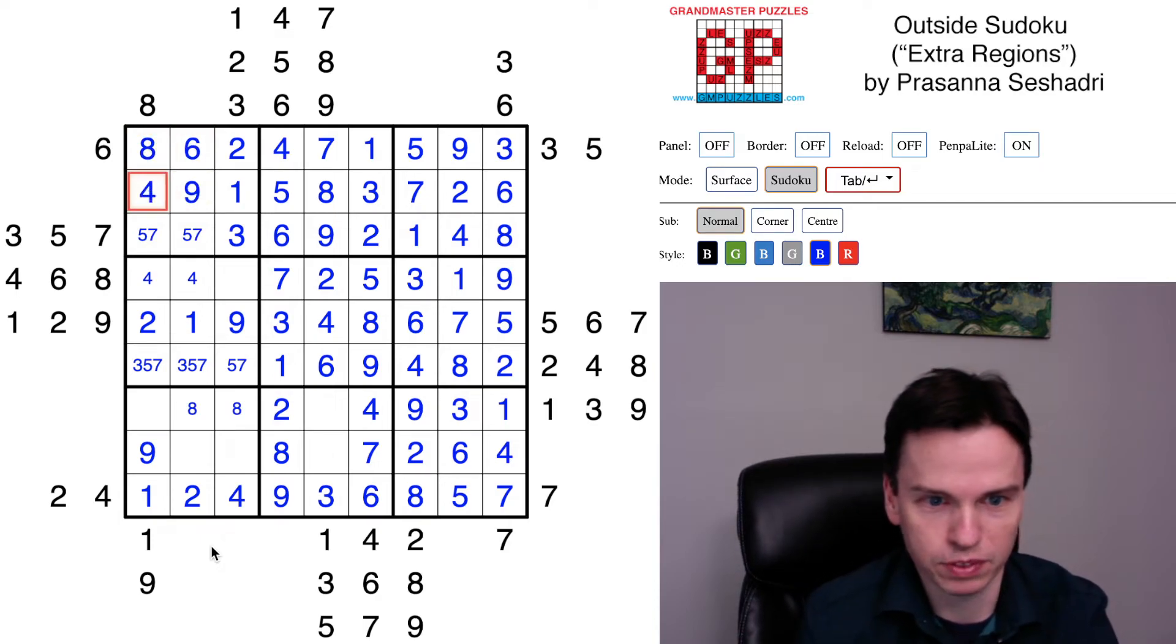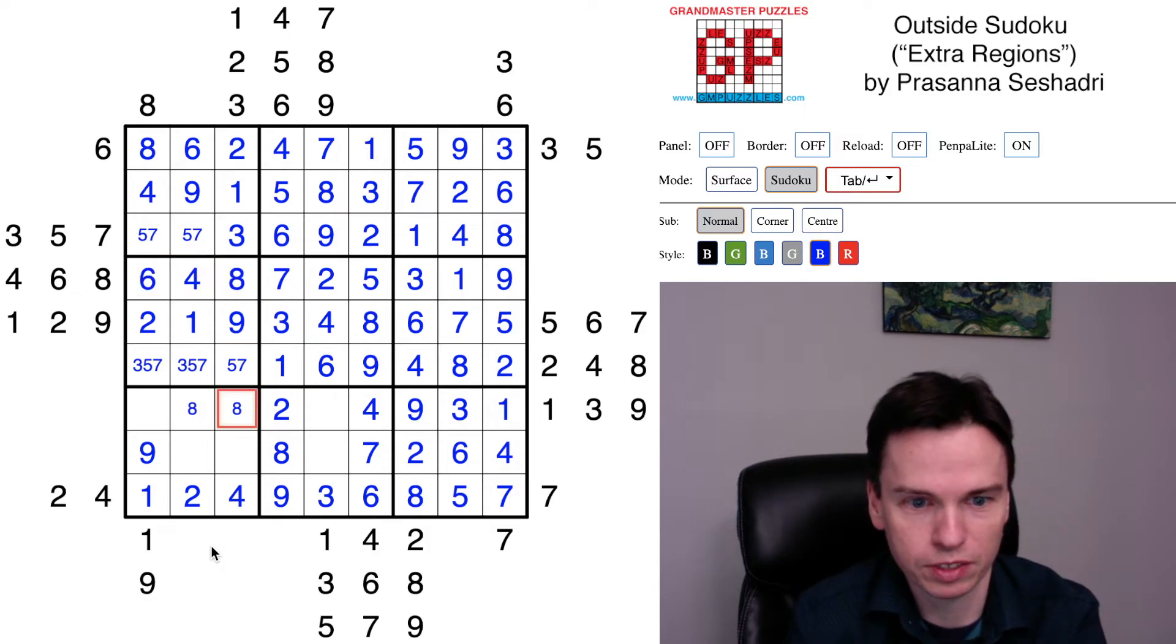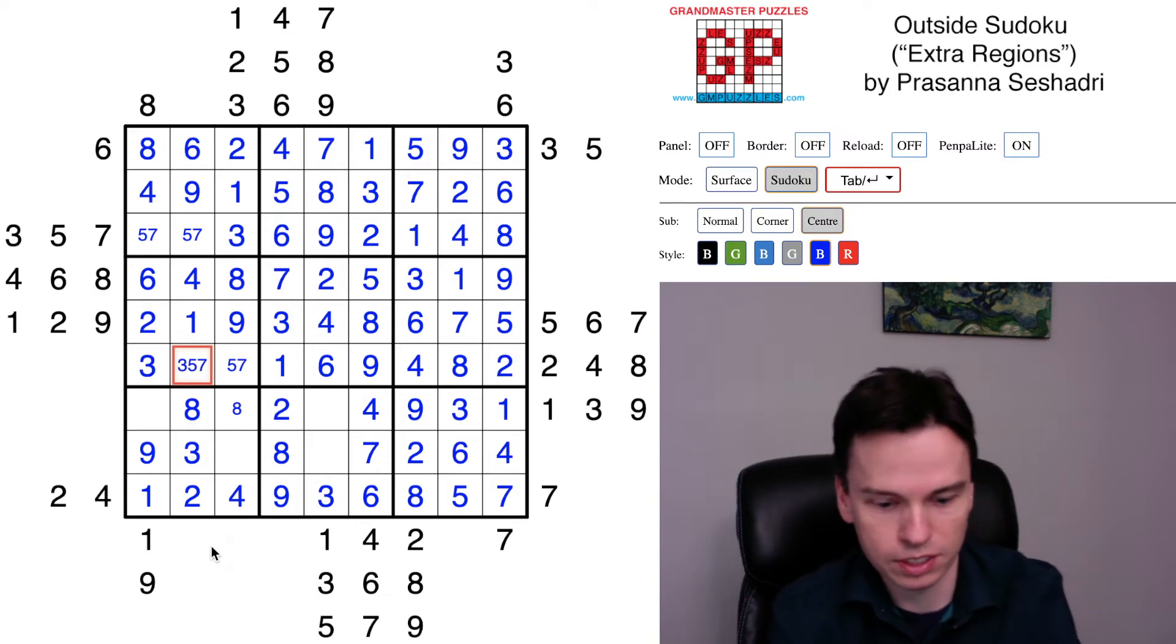That now limits just 6 and 8 for these cells. So 8 is only allowed there, 6 is only allowed there, pushes down 9, pushes over 4, pushes over 4. We've got 6 and 8, but 8 is up above, gives us this 8.